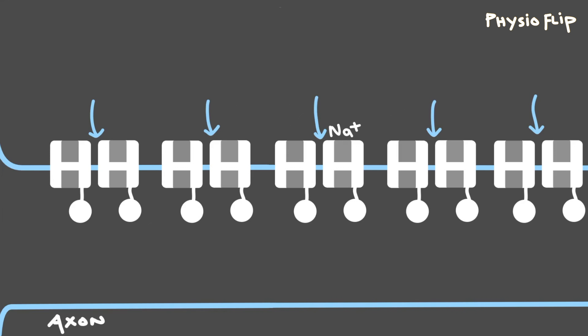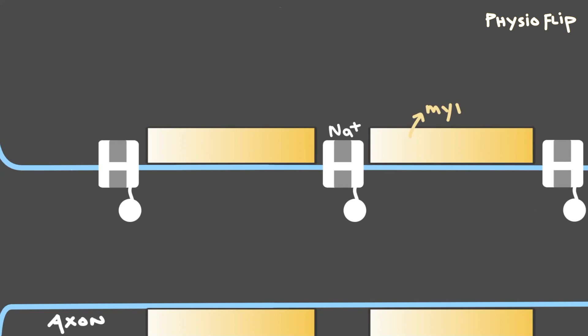To make these electrical signals travel faster we can replace many of these voltage-gated channels with a structure called myelin.